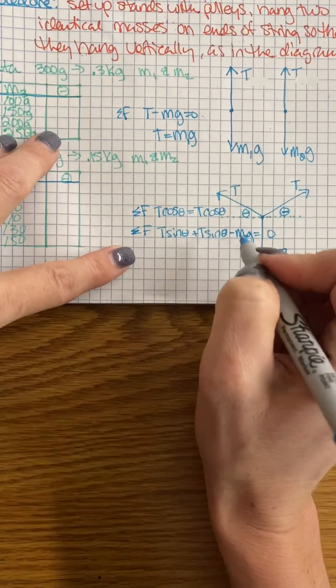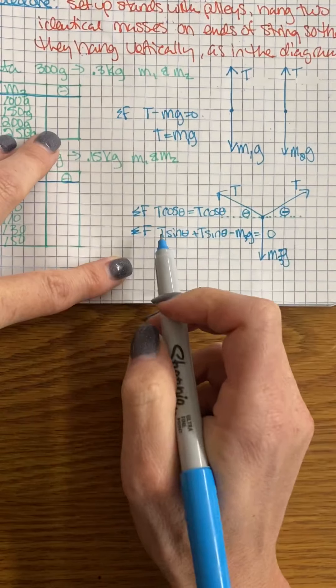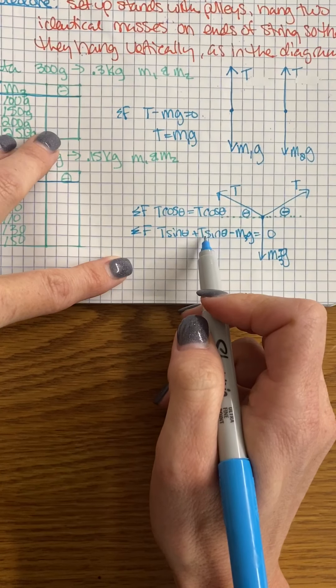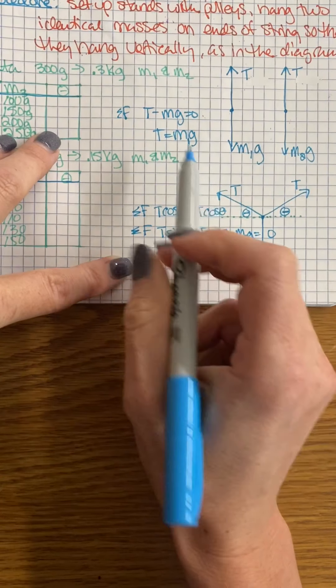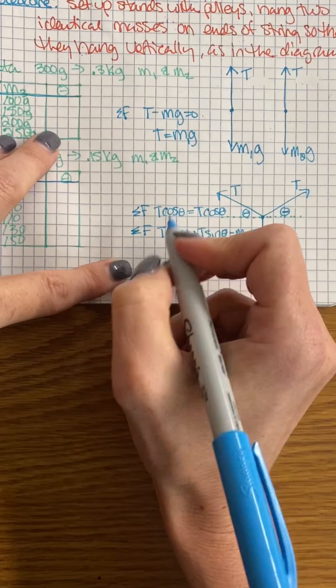When I set this up, my upward forces are going to be equal to my downward forces. And since my tensions are the same, and since my tensions are equal to Mg, I'm going to say—I'll do it in two.